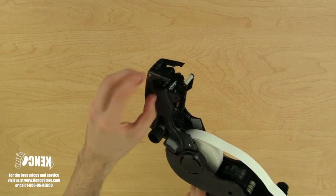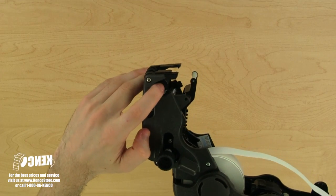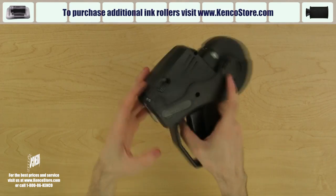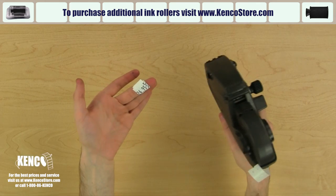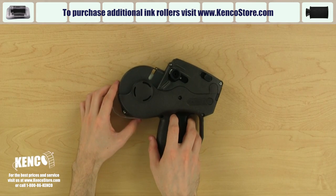Once the ink roller is removed, we will get a replacement ink roller from this packaging and slide it onto the ink roller rod. It should snap right on. Additional ink rollers can be purchased from kencostore.com.